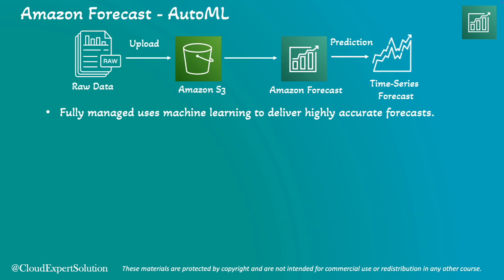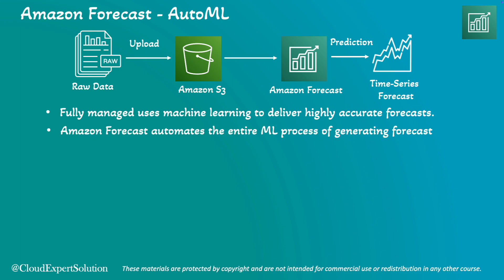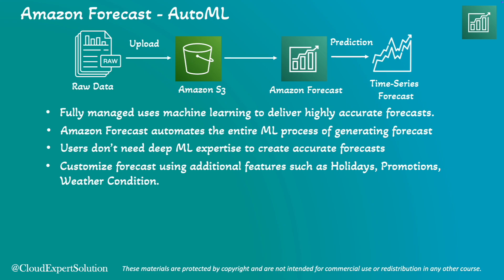Amazon Forecast is a fully managed service provided by AWS that uses machine learning to deliver highly accurate forecasts. It automates the entire machine learning process, from data processing to model training and tuning, and you don't need deep machine learning expertise to create accurate forecasts. You can also customize forecasts to suit your specific business needs by incorporating additional data such as holidays, promotions, and weather conditions.